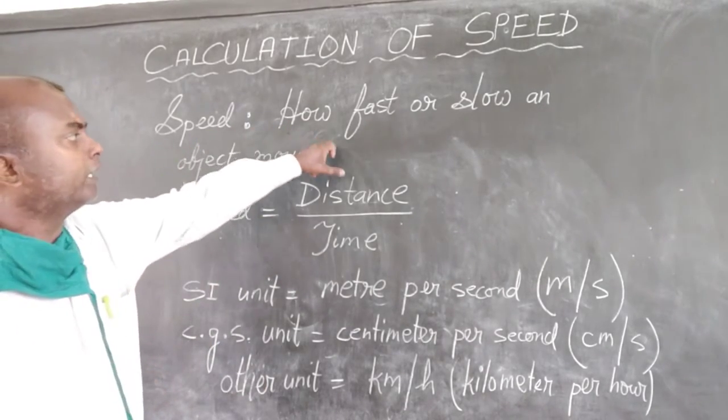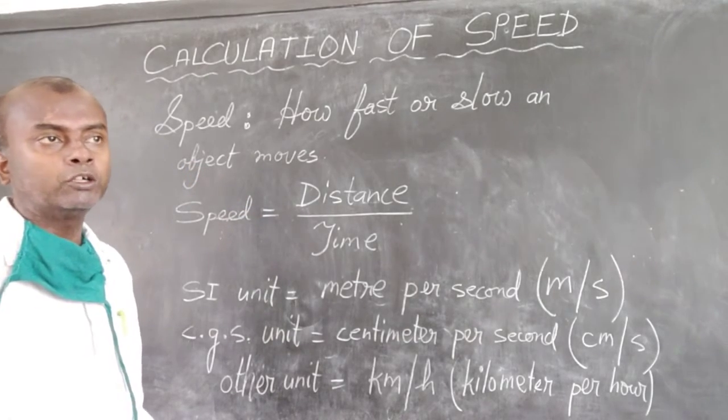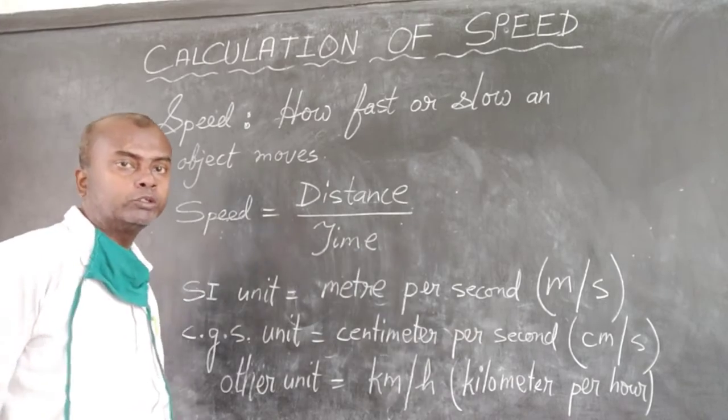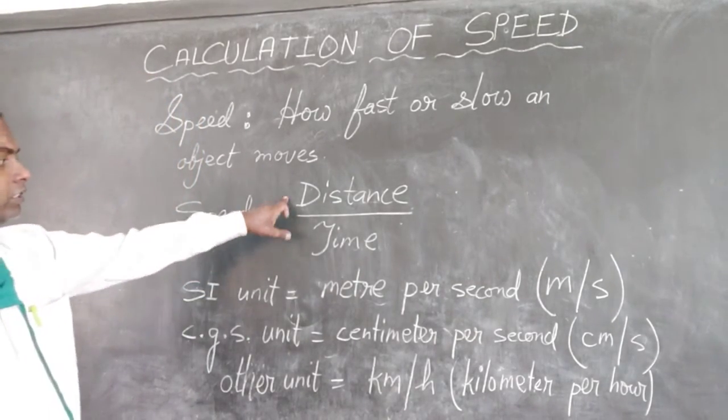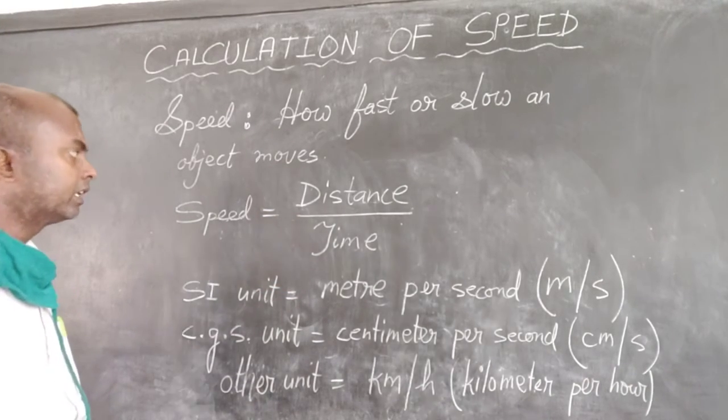Now, speed is how fast or how slow an object moves. Object moves from one place to another. But how fast or how slow it moves is known as speed. So the formula for speed is distance by time. Keep this in mind.